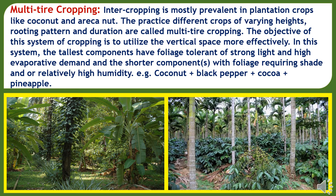Multi-tiered cropping is one method of intercropping mostly prevalent in plantation crops like coconut and areca nut. Different crops of varying heights, rooting patterns, and duration are practised under multi-tiered cropping. The objective of this system is to utilize the vertical space more effectively. In this system the tallest components have foliage tolerant of strong light and high evaporative demand, and the shorter components with foliage requiring shade or relatively high humidity. Example: growing coconut plus black pepper plus cocoa and pineapple.